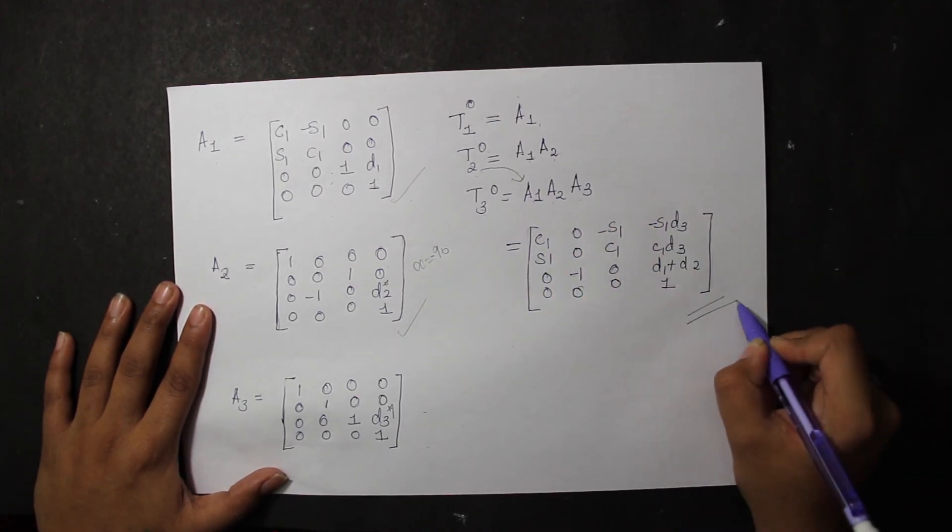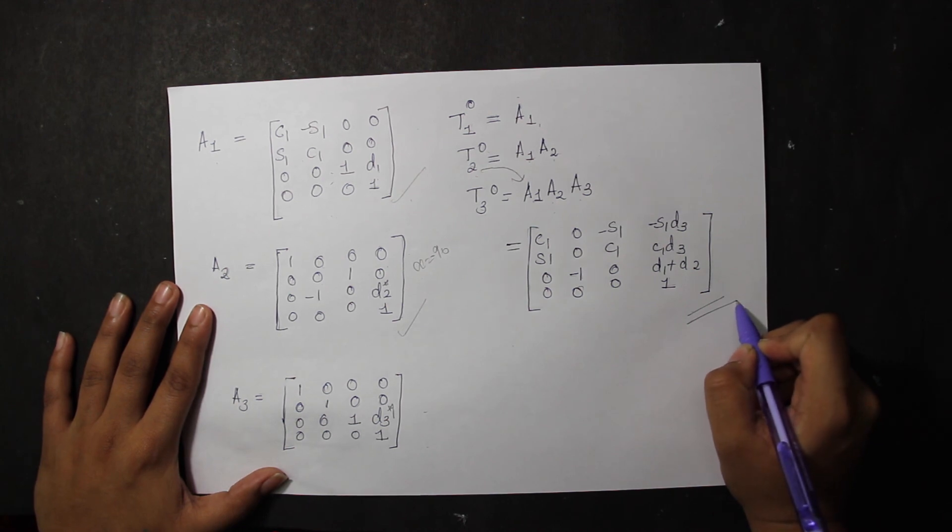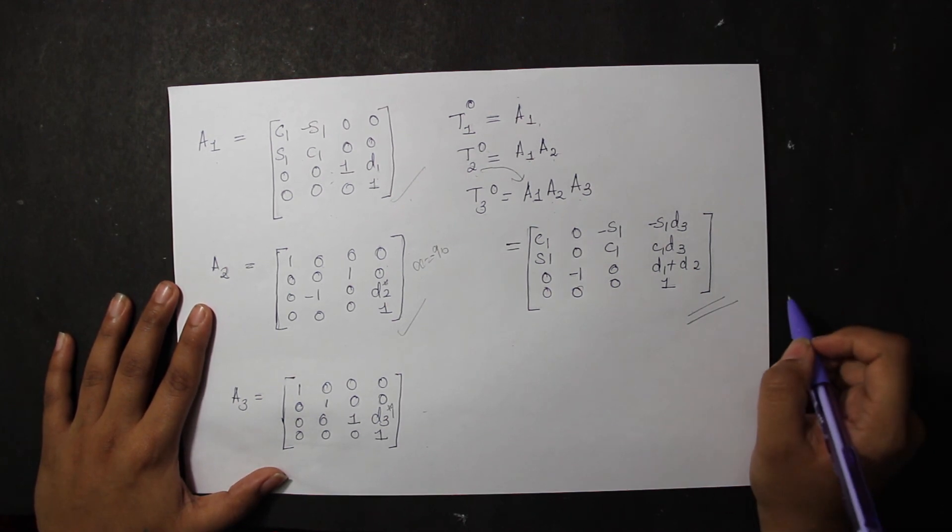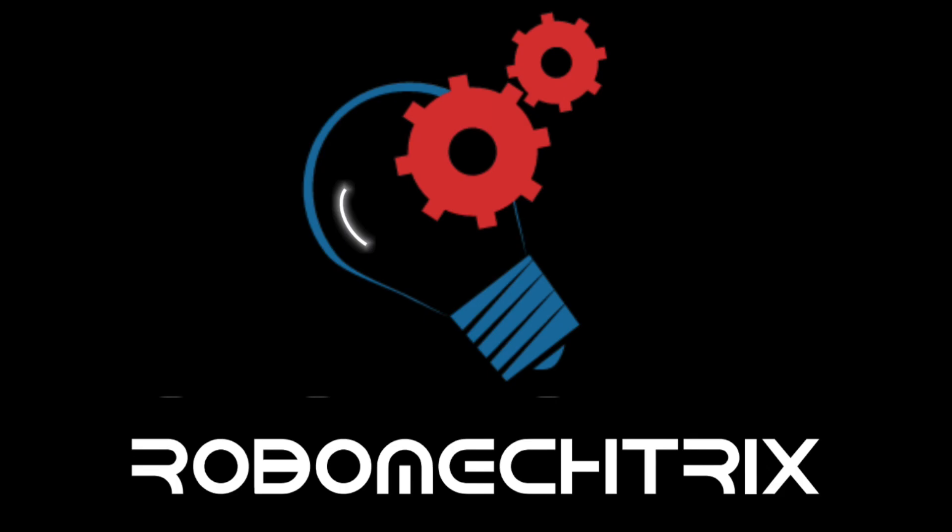You go ahead and do it on your own, find out this matrix, and the forward kinematics is there. Thank you. I hope you guys understood. For any queries, please comment below. Thank you.